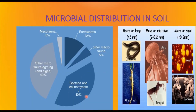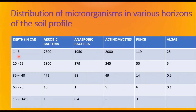Here you can see the microbial distribution in soil. Bacteria and actinomycetes are going to be 40%, other microflora including fungi and algae is 40%, other fauna is 5%, earthworms will be 12%, and mesofauna is 3% — so macro, meso and micro. Depending upon the depth of the soil, the distribution of microorganisms also varies. For example, at 1 to 8 cm depth, aerobic bacteria are more in number, anaerobic are very few, actinomycetes are 2000, fungi 119, and algae 25. As you go deeper into the soil, the number of microorganisms decreases.